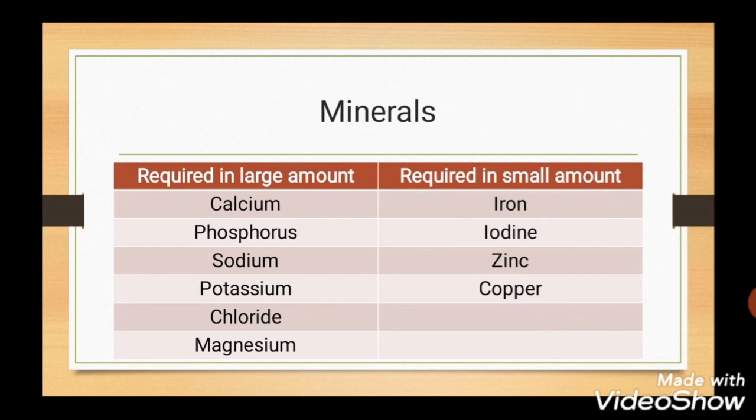Minerals are divided into two categories. First, minerals required in larger amounts — these are calcium, phosphorus, sodium, potassium, chloride and magnesium. Second, minerals required in small amounts, also called trace elements — these are iron, iodine, zinc and copper.